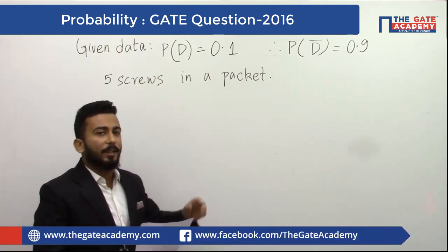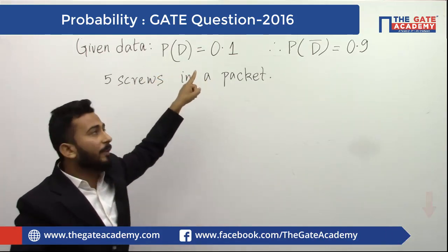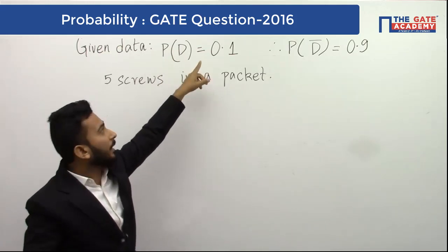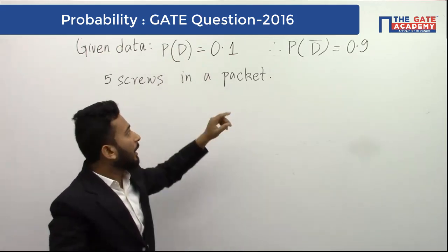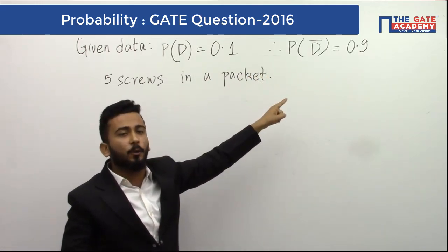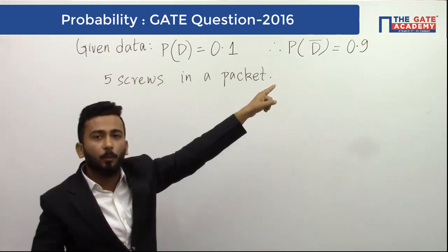So these are the data given to us. I am taking the probability of a defective screw, I am denoting it as D, P(D) is 0.1. I am denoting the probability of a non-defective screw by P(D') which is 0.9.